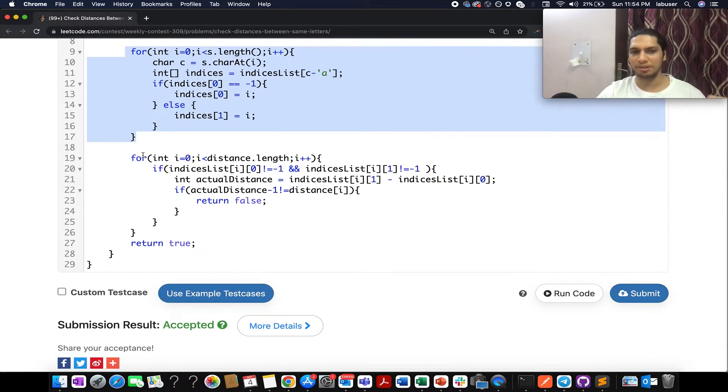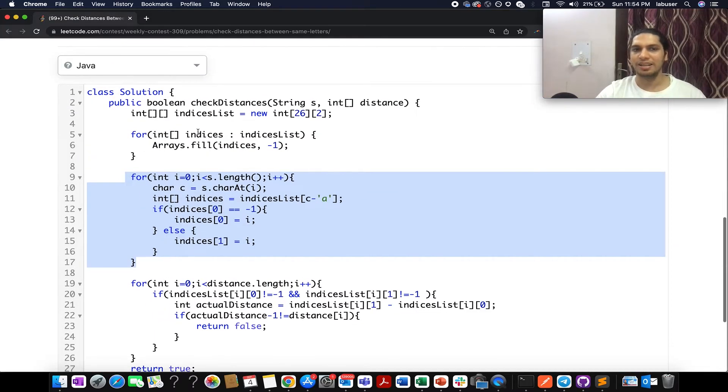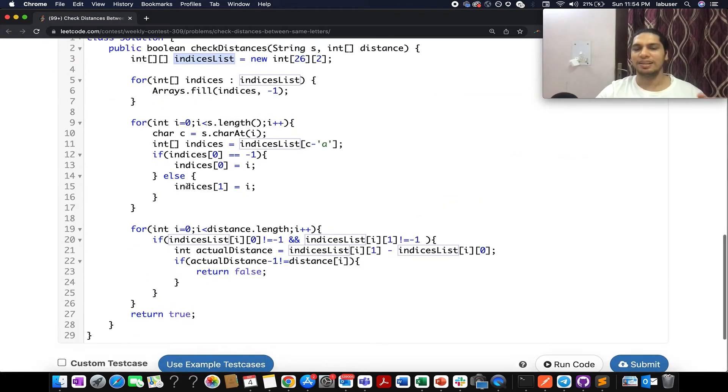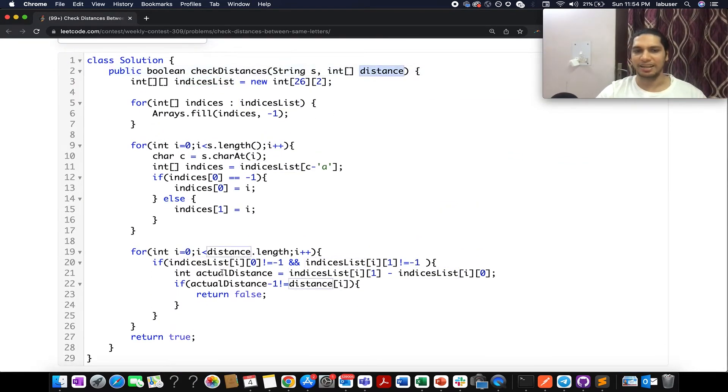Now, let's proceed ahead. Once we have built the indexes list map appropriately, let's start the iteration over the distance array. And in case my indices at i comma zero index is not equal to minus one, and indices list at i comma one is not equal to minus one,